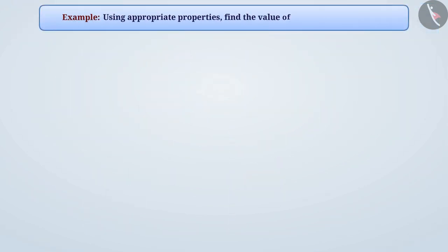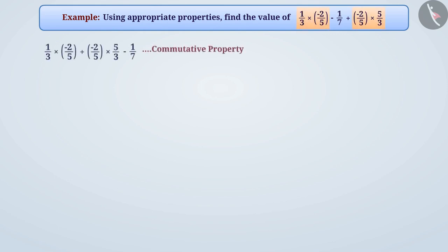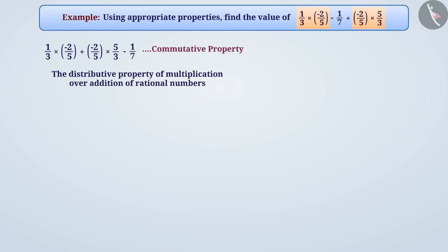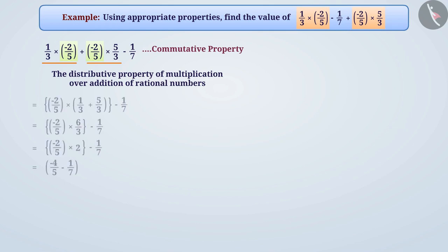Using appropriate properties, find the value of one by three multiplied by minus two by five minus one by seven plus minus two by five multiplied by five by three. Since addition is commutative for rational numbers, we can put these two operations together. From the distributive property of multiplication over addition of rational numbers, we will take minus two by five out of the parenthesis and simplify.